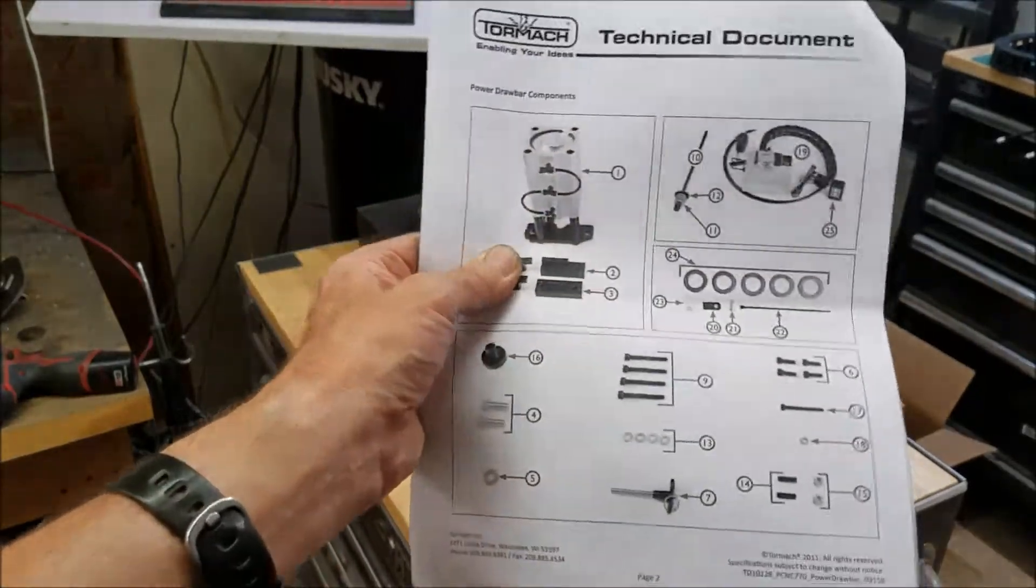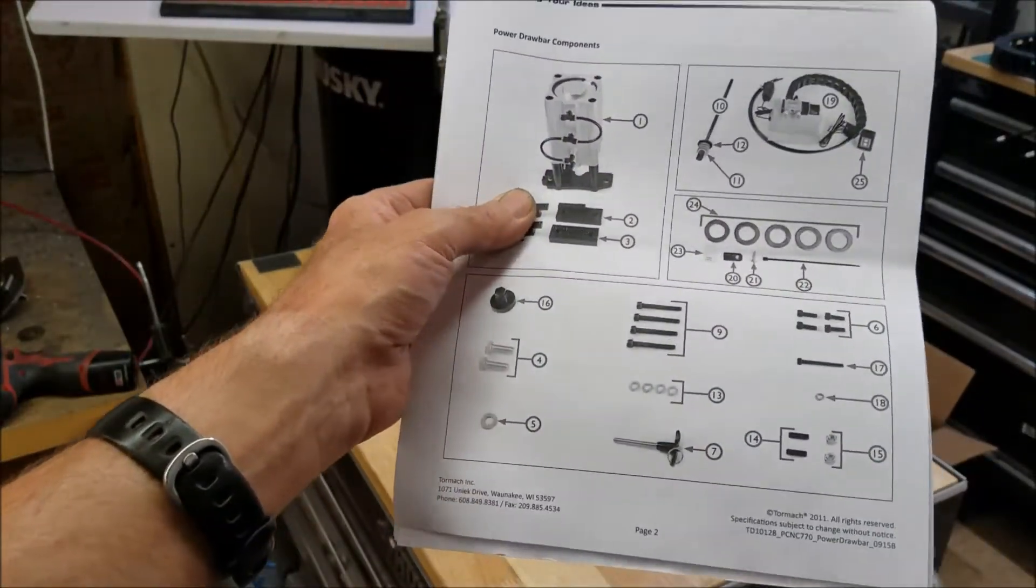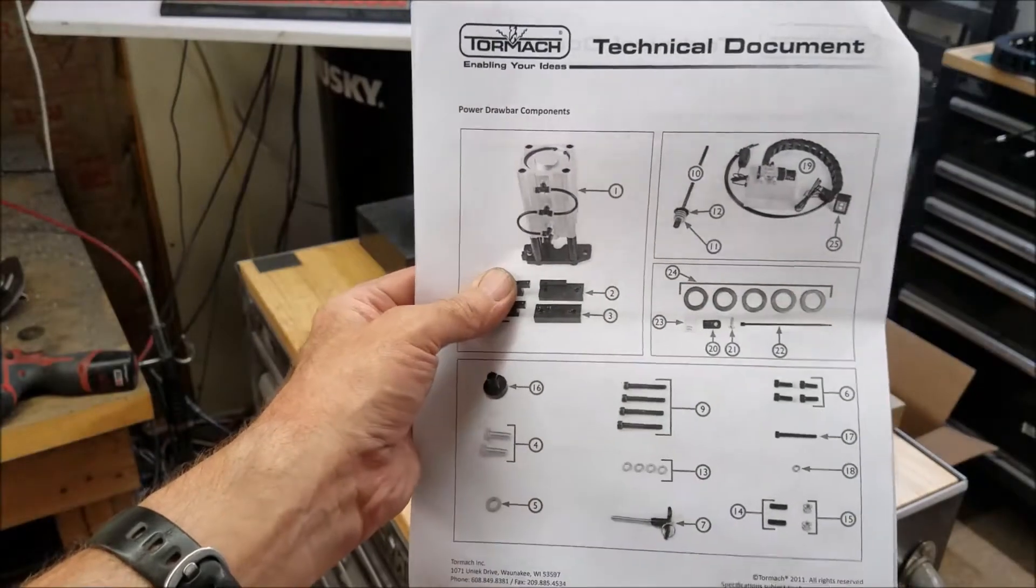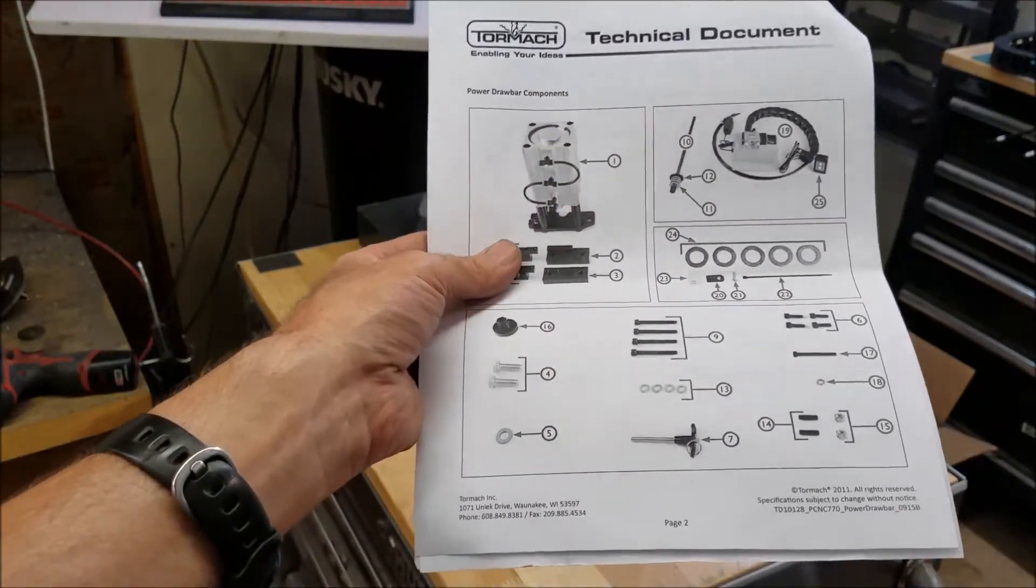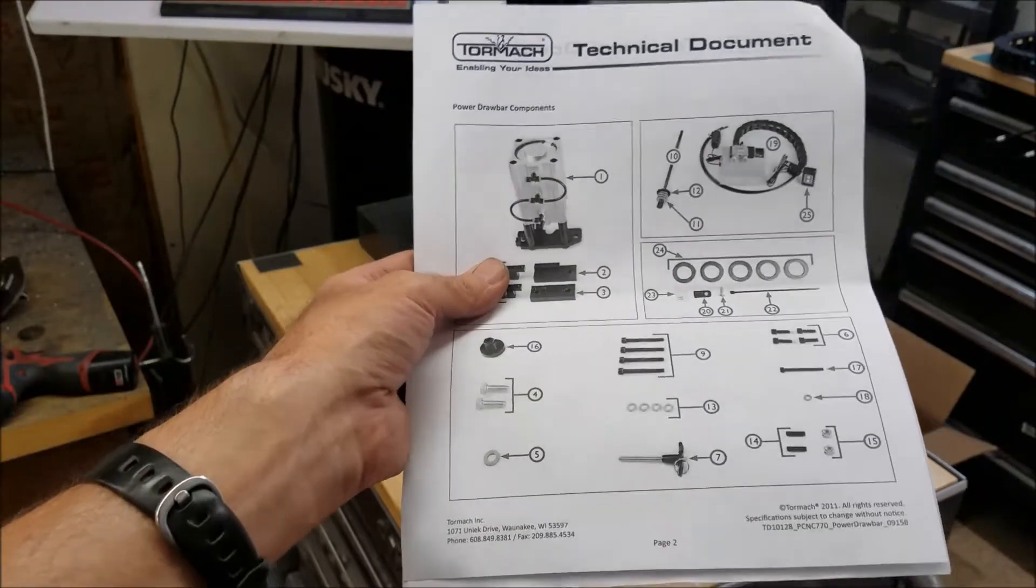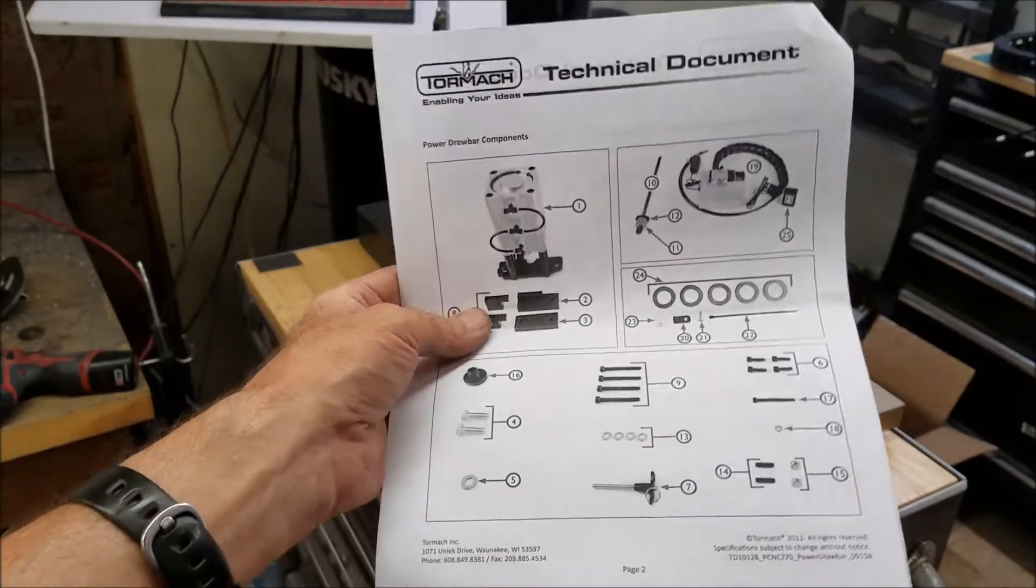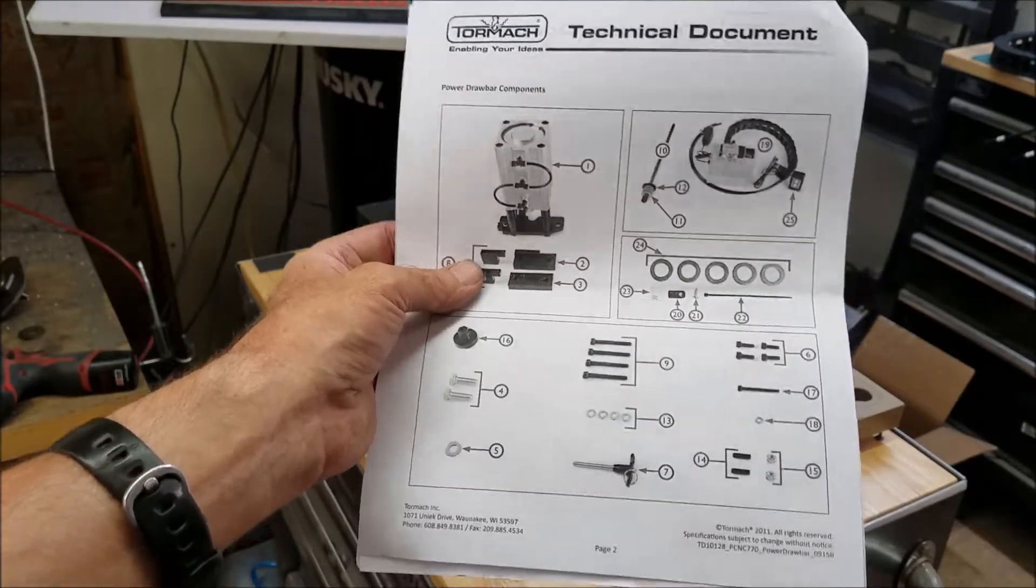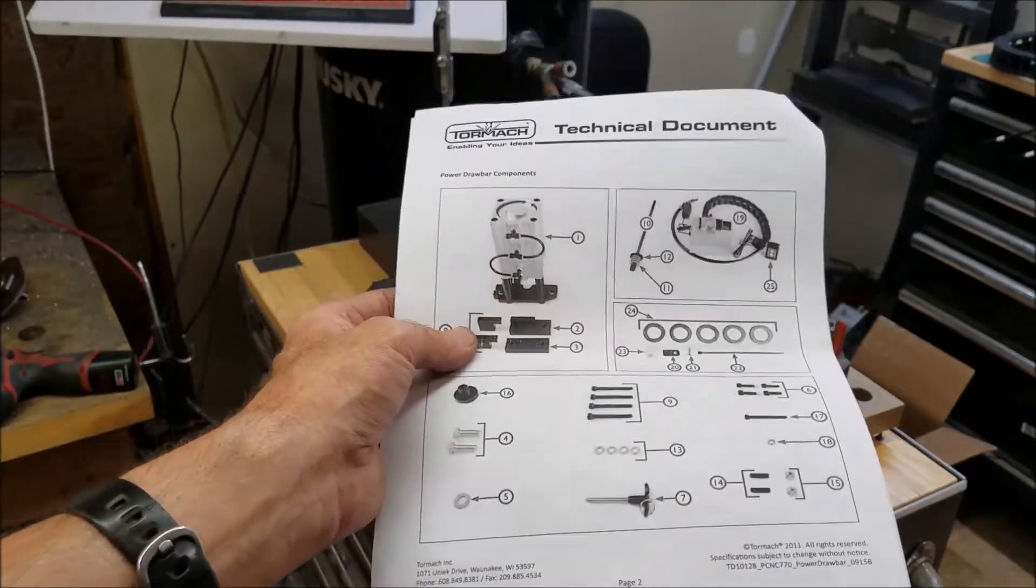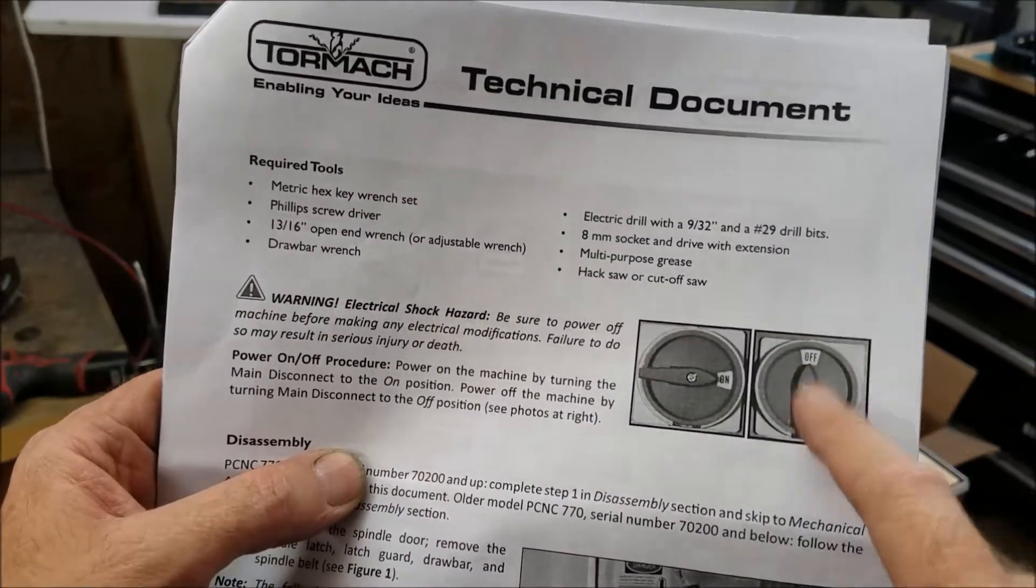The first part of the install is to make sure you have all the components listed, because you don't want to take the mill apart and then find out you're missing some key component and have to put it back together. The next step is to make sure the machine is powered off.